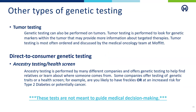Other types of genetic testing you may have done or heard of: tumor testing is typically performed on a tissue sample and is normally ordered by a medical oncologist. This testing looks for genetic markers only within the tumor that may provide information about targeted therapies. This is different from the genetic testing we do, which looks for a genetic mutation present in all of the cells in your body. Additionally, direct-to-consumer testing is performed by different companies to examine ancestry or general health screens; however, these tests are not meant to guide medical decision making.